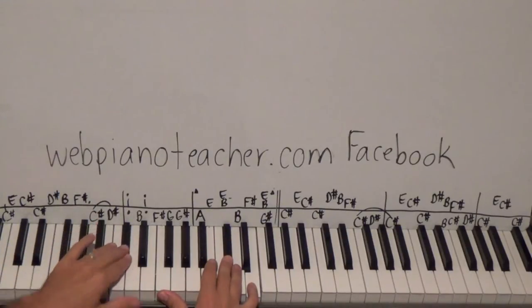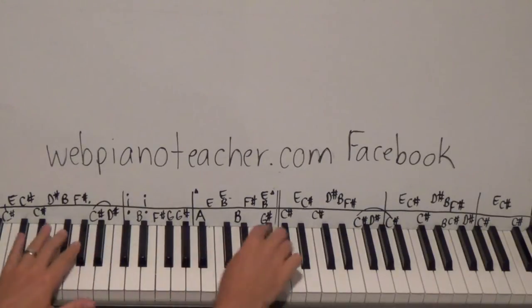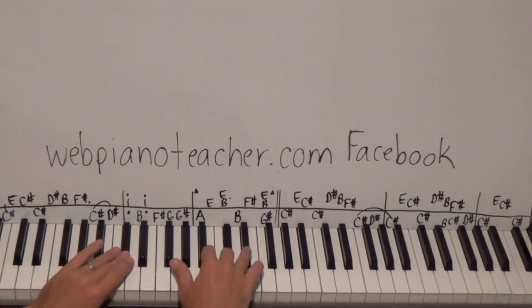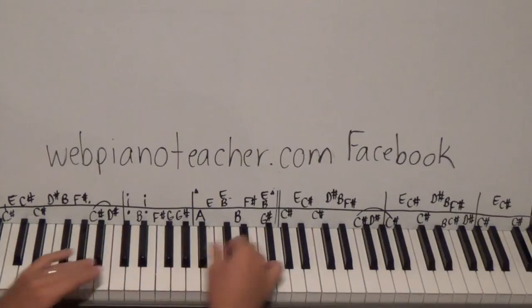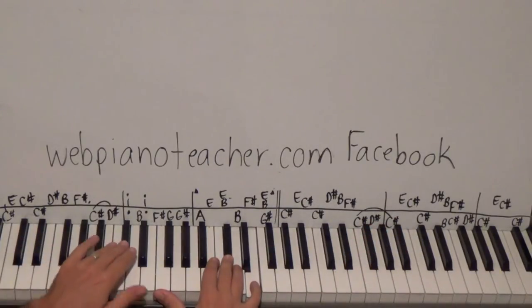So left hand on a C sharp, then the right hand does E, C sharp, and then a higher C sharp on the left hand. Then we're going to go D sharp, B, F sharp. So it's one, two, three, and four. Then we go back down: low C sharp, D sharp, C sharp, and then E, C sharp, and then left hand higher C sharp.